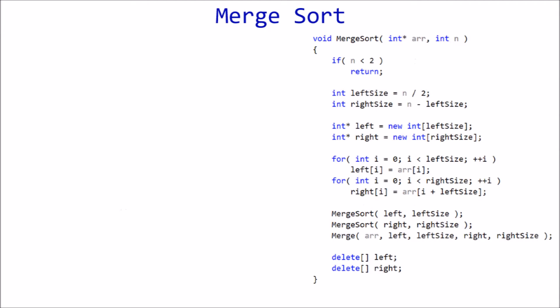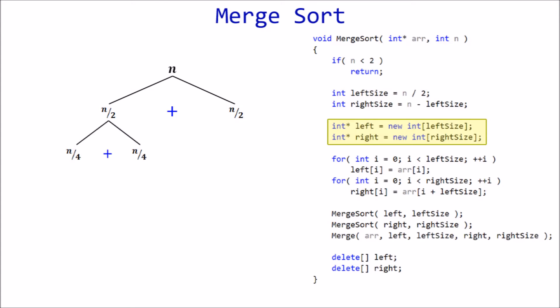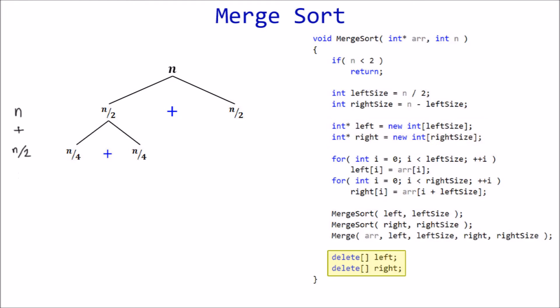Space complexity: in this series up until now, every sorting algorithm has had O(1) space complexity. Merge sort, on the other hand, requires a bit more because of the use of temporary arrays to store left and right. The first split uses up space for n elements — half on the left and half on the right. As we recurse down the left side, the amount of additional space required is cut in half each time, giving us a series.